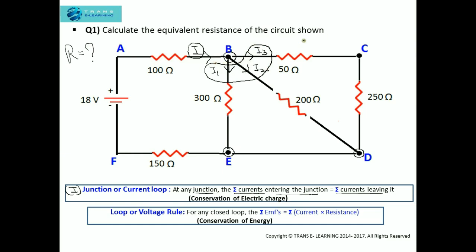That means I1 plus I2 plus I3 should be equal to I, because this law is in accordance with the law of conservation of electric charge.